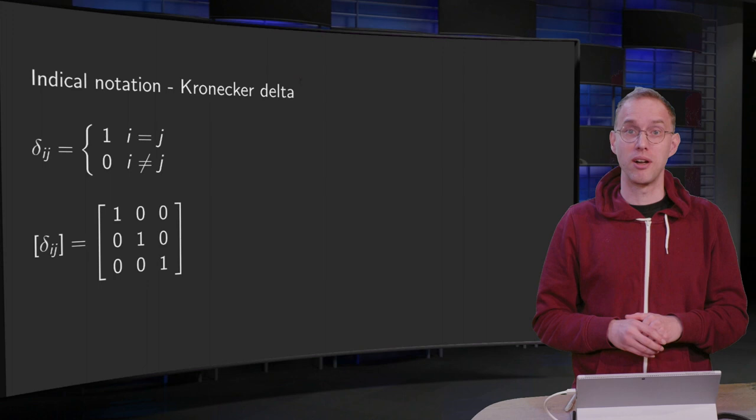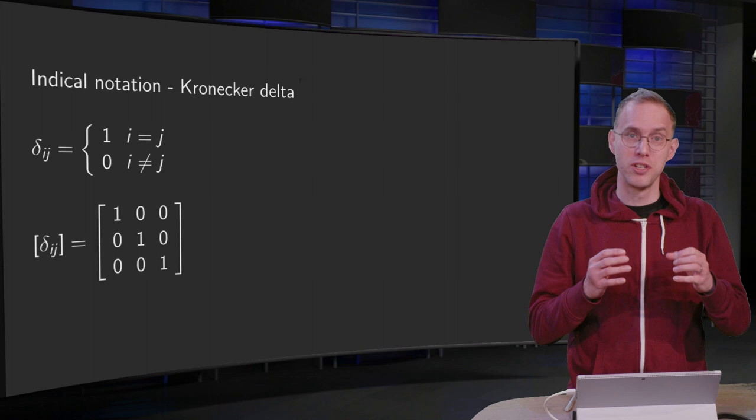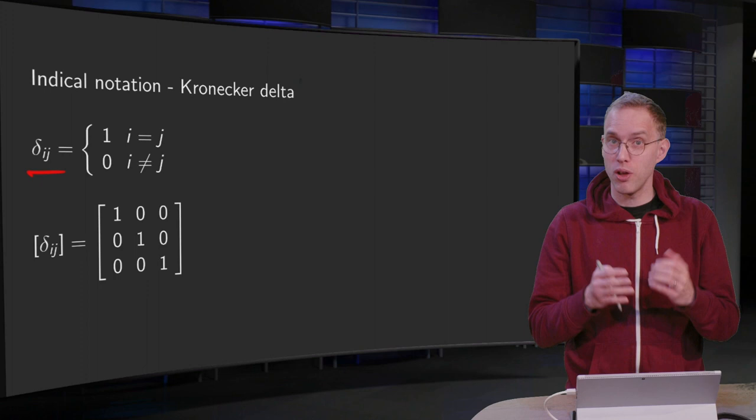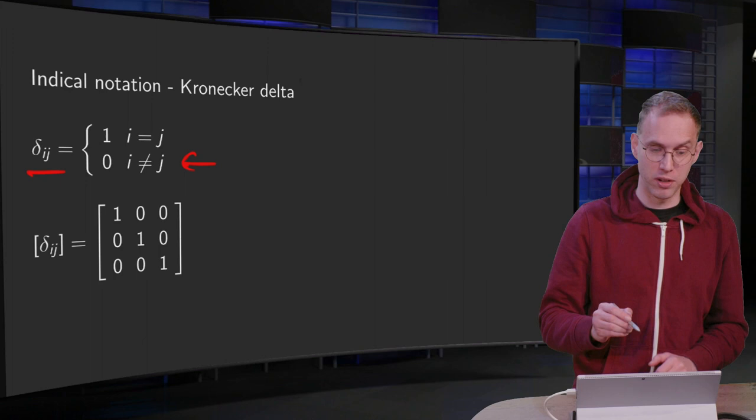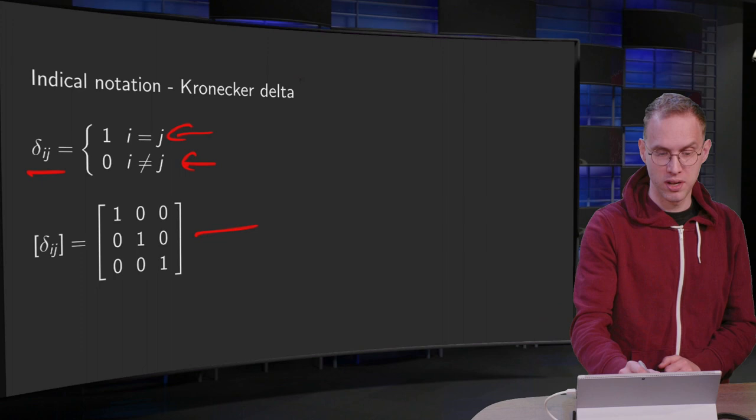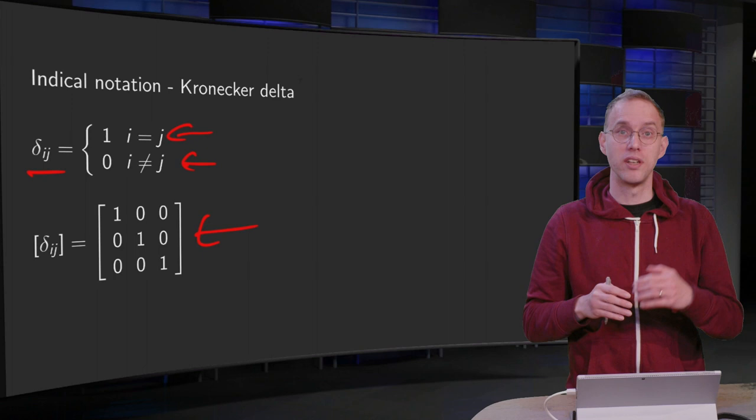So there's our Kronecker delta. It's the delta ij, so it has two indices i and j. What does it do? Well, it's almost always zero—zero if i is not equal to j and only one if i equals j. So delta 11, delta 22, and delta 33 are 1, and all the others are 0. We can write this as a matrix as follows: only the elements on the diagonal are 1 (delta 11, delta 22, and delta 33) and the others are 0.